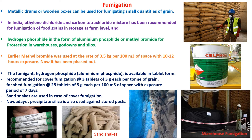In the fumigation process, metallic drums or wooden boxes can be used for fumigating small quantities of grain. In India, ethylene dichloride and carbon tetrachloride mixtures have been recommended for fumigation of food grains in storage at farm level, and hydrogen phosphide in the form of aluminium phosphide for protection in warehouses, godowns, and silos. Earlier, methyl bromide was used at the rate of 3.5 kg per 100 cubic meters of space with 10 to 12 hours exposure, but it has been phased out due to toxicity and residue in food grains. Aluminium phosphide is available in tablet form and recommended for cover fumigation at 3 tablets of 3 g per tonne of grain storage. For seed fumigation, 25 tablets of 3 g each are used for a space of 100 cubic meters. Precipitated silica is also now used against stored pests.